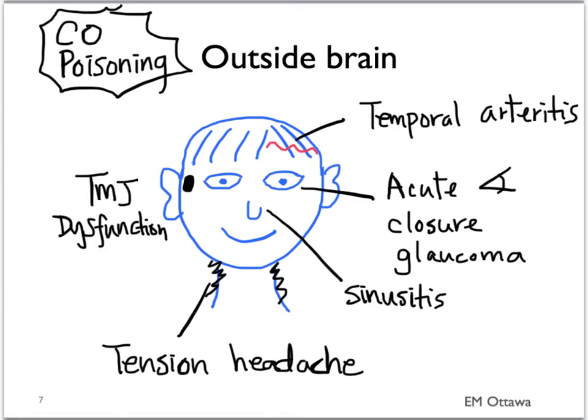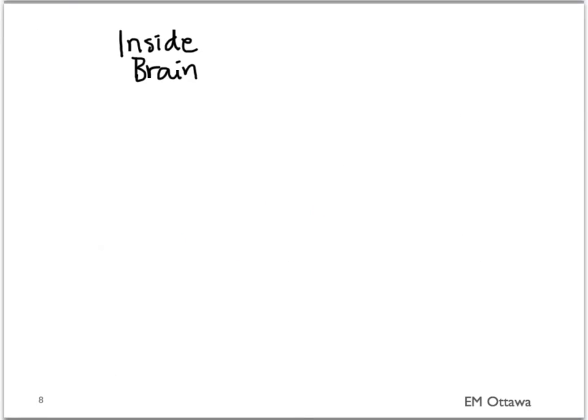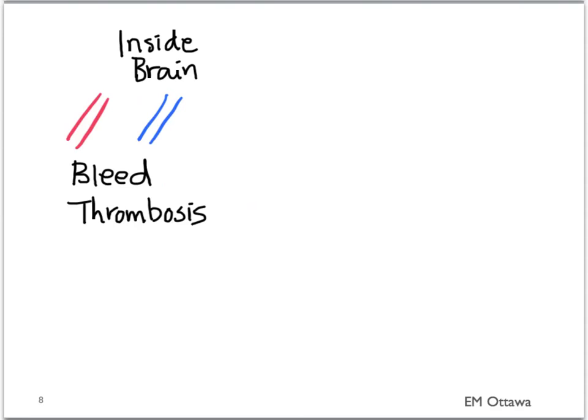Out of the ones we've discussed, which are the must-not-miss diagnoses? Inside the brain, almost all diagnoses are must-not-miss. Therefore, it includes bleeding, thrombosis, space-occupying lesions, infection, and intracranial hypertension.